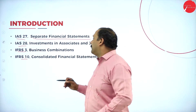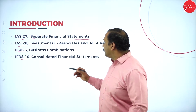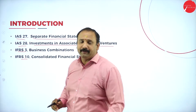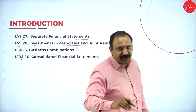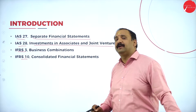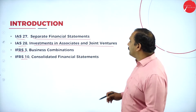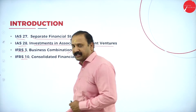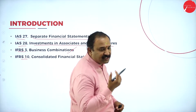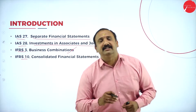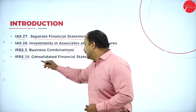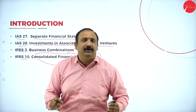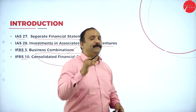That's why we are talking about separate financial statements, followed by investments in associates and joint venture companies under IAS 28. Then we move to business combination under IFRS 3, which covers the various combining factors that join hands together, followed by consolidated financial statements in IFRS 10, which covers all financial activities presented to the public.